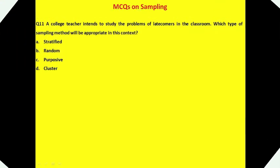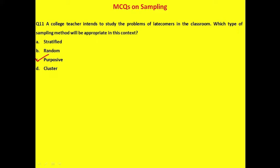Question 11: A college teacher intends to study the problems of latecomers in the classroom. Which type of sampling method is appropriate? Options: stratified, random, purposive, or cluster. The answer is purposive sampling, because the researcher uses judgment to select students who are latecomers — those likely to provide accurate information relevant to the study. The correct answer is option C.